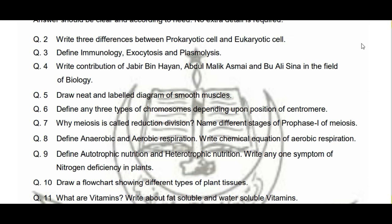Headings banakar contributions hi likhein — aisa na ho ke aap irrelevant points se start karein. Next question hai: 'Draw neat and labeled diagram of smooth muscles.' Diagram draw karte waqt is baat ka khayal rakhein ke pencil bilkul sharp ho, nib blunt na ho. Agar aap color use karein toh well and good. Next: 'Define any three types of chromosomes depending upon position of centromere.'